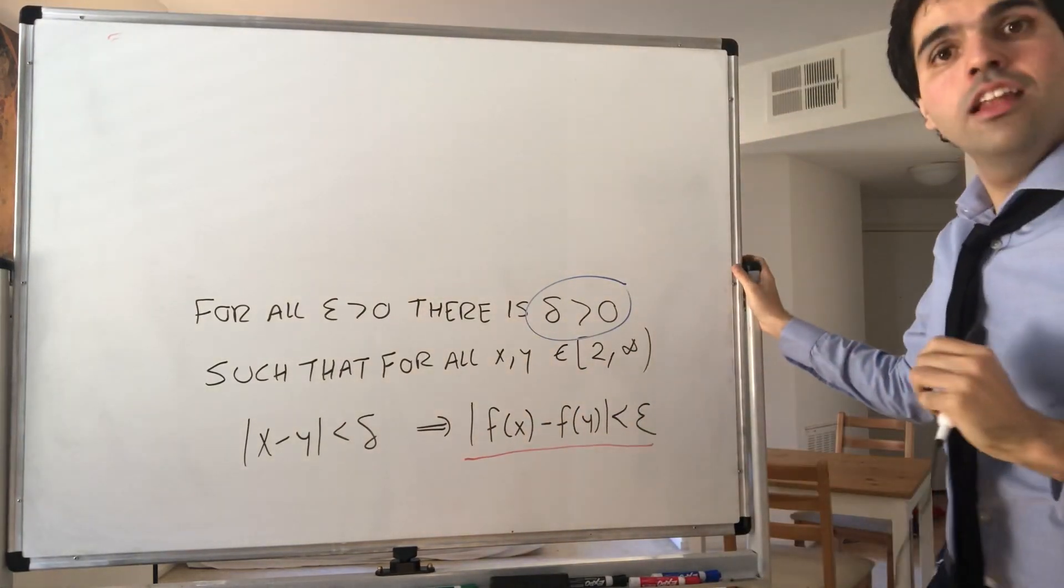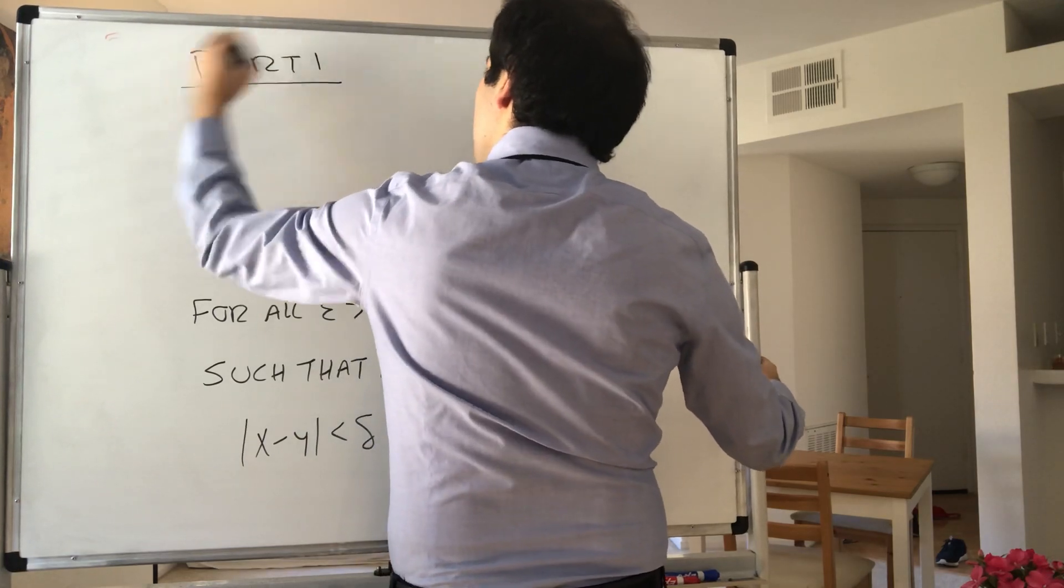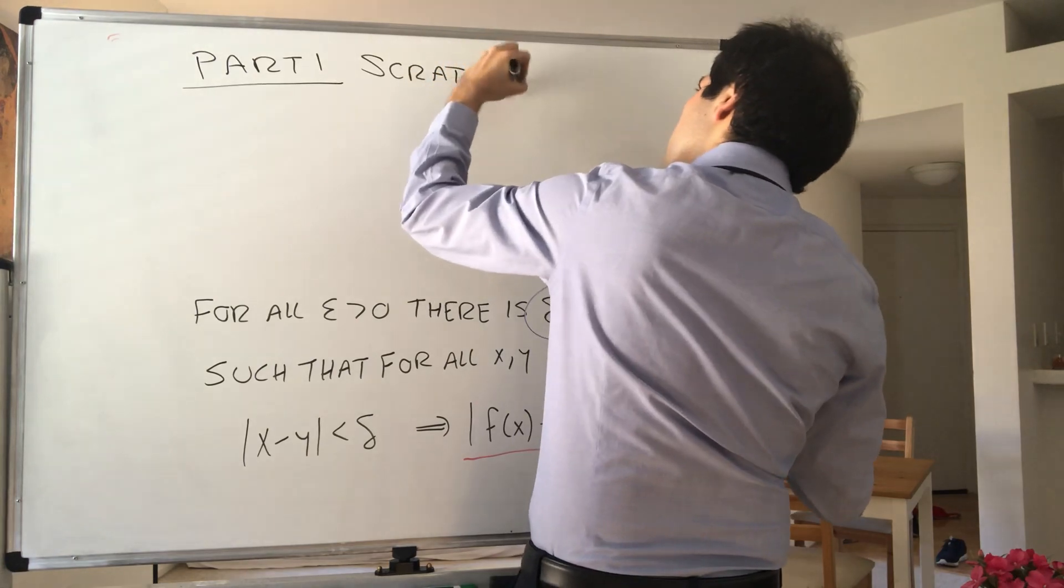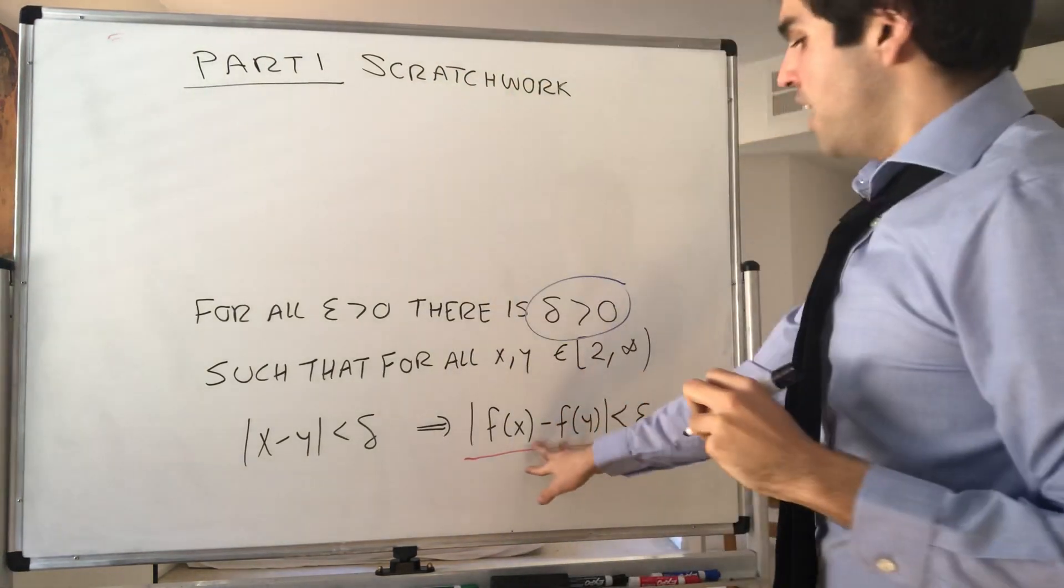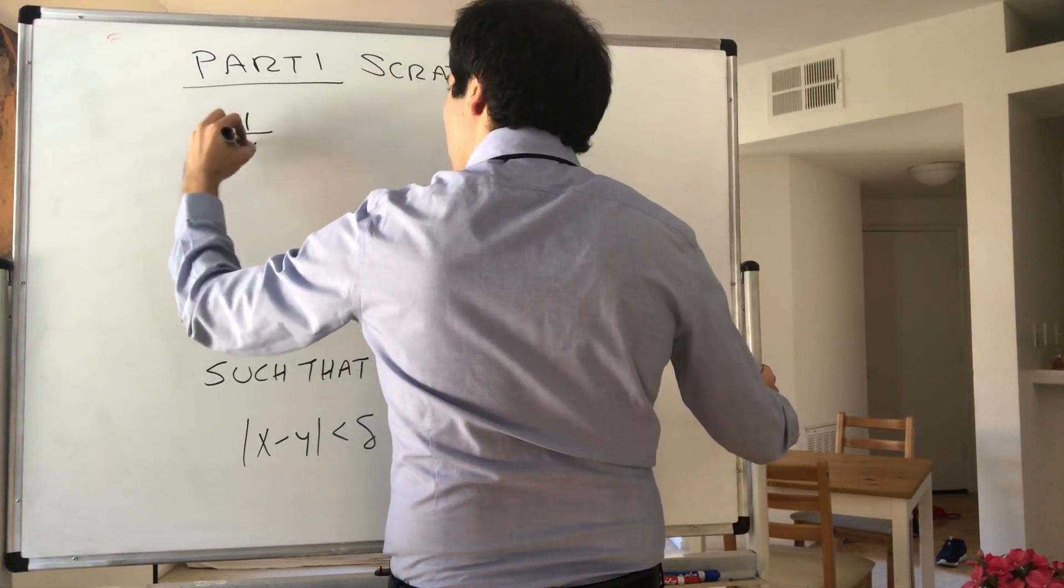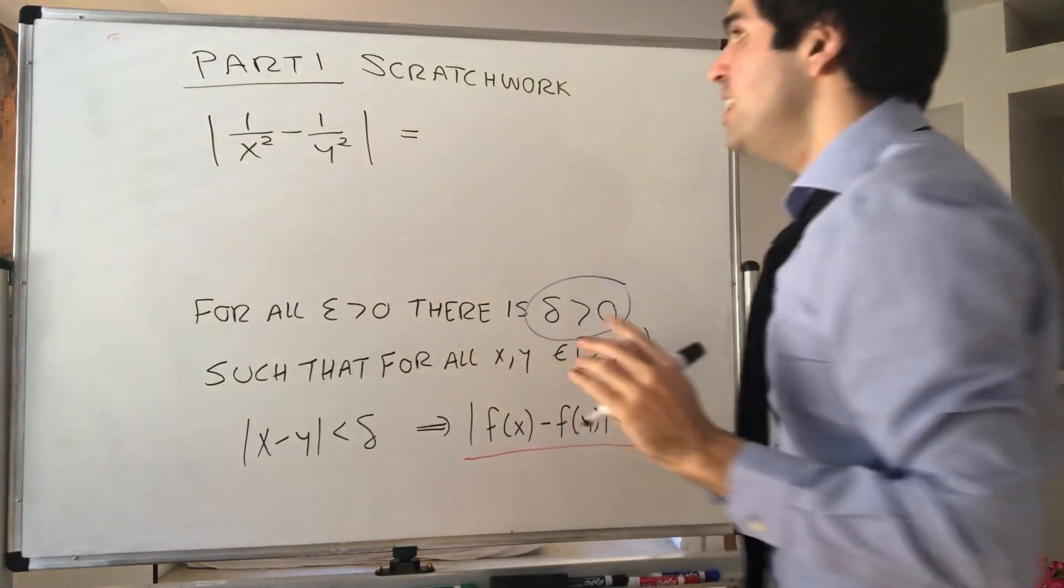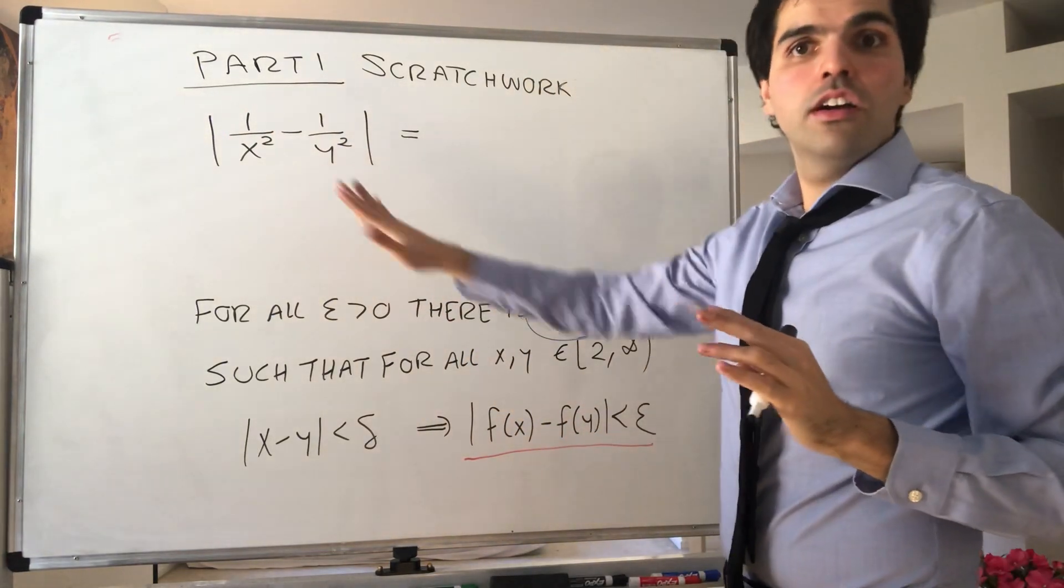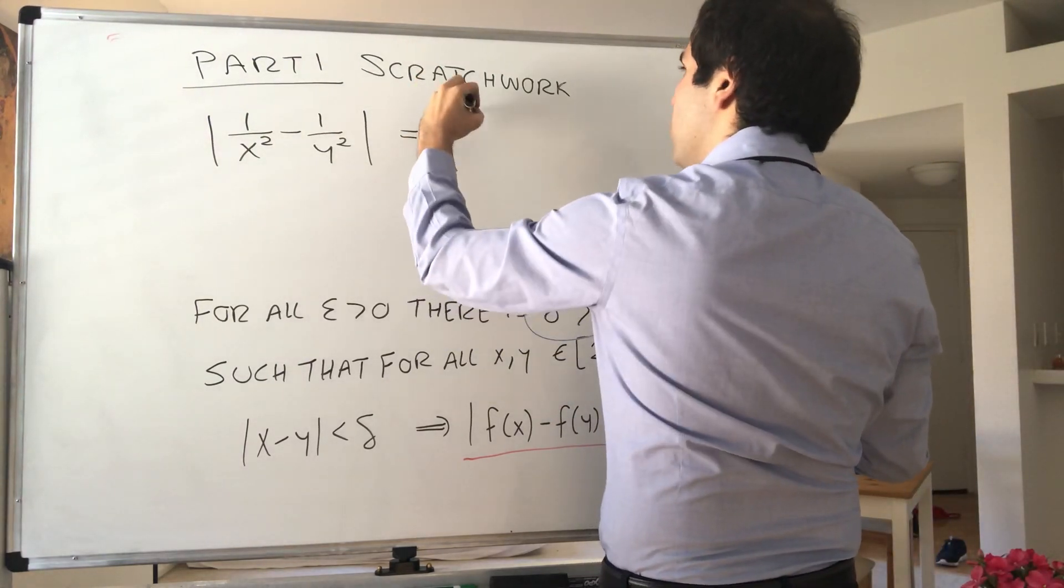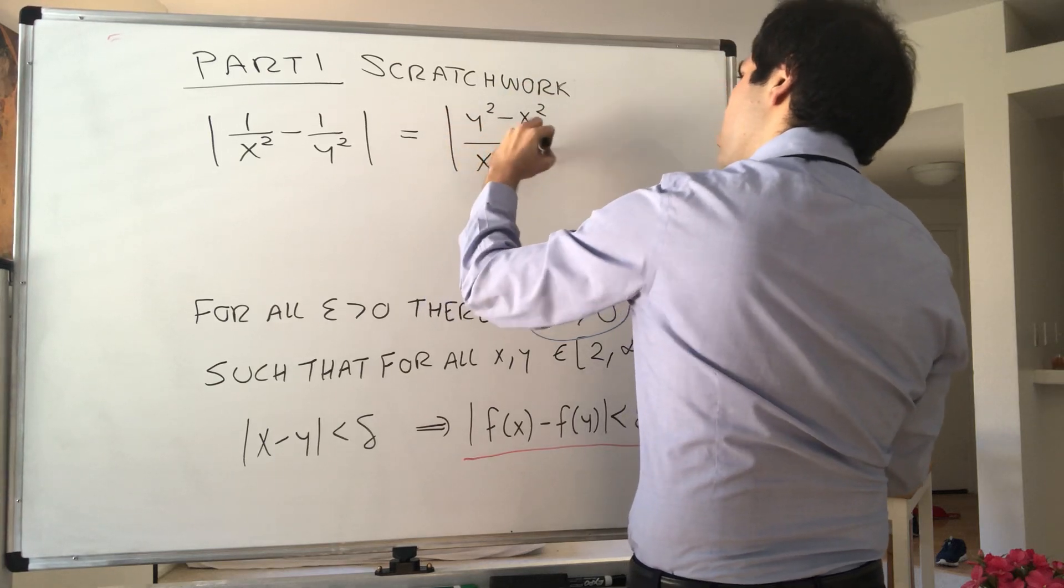Part one, do some scratch work. Let's calculate f of x minus f of y. In this case, 1 over x squared minus 1 over y squared. The nice thing is this can be put on a common denominator. So this becomes absolute value of y squared minus x squared over x squared times y squared.